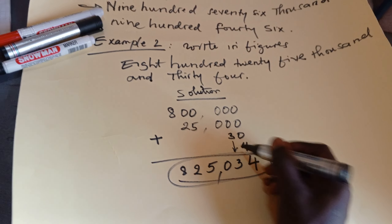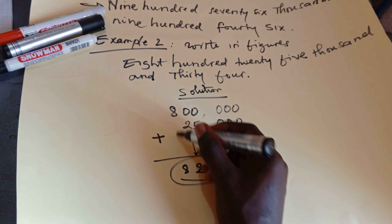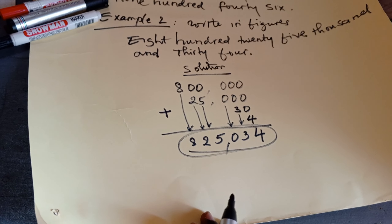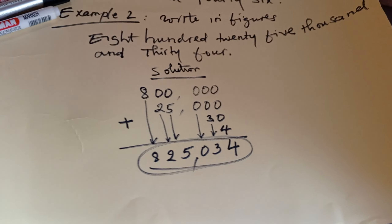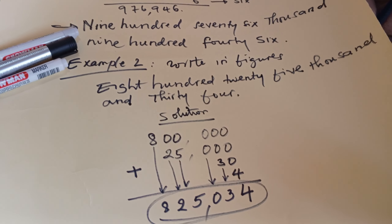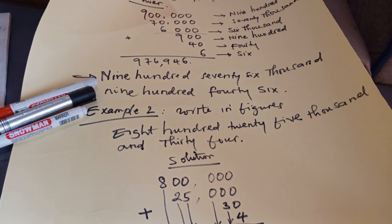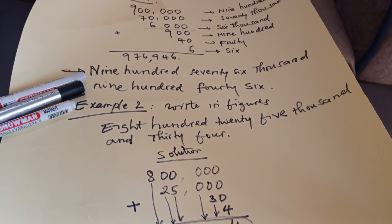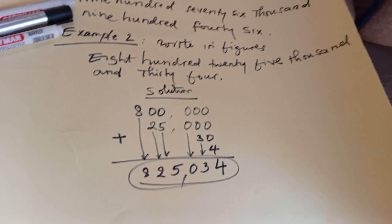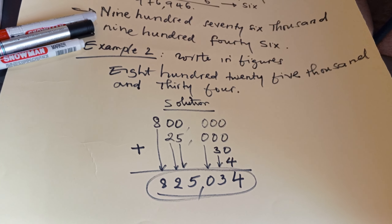You move each value down and then add them together to get the final figure. Thank you very much — that was P5, the first video on writing numbers in words and converting words to figures. I think you have seen how to do this. Please subscribe and comment. Thank you very much and see you in the next video.